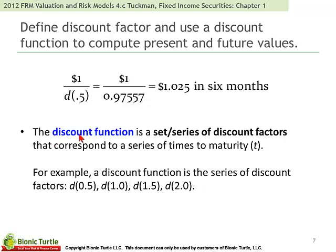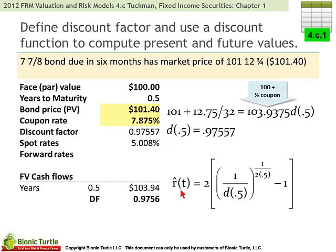Now, the set of discount factors is called the discount function. For example, here's a discount function consisting of a series: the six-month discount factor, the one-year discount factor, the 18-month discount factor, and the two-year discount factor. This is also illustrated in the 4C1 spreadsheet.